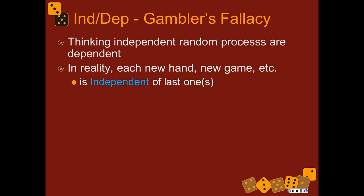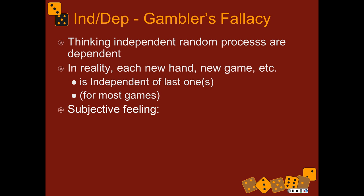Blackjack might be a little different, but if you're playing roulette or a slot machine, each time you pull that handle you've reset back to zero. Your probability of winning on that try is exactly the same as your probability of winning at any other time you pulled that handle. They make the machines that way on purpose. However, your subjective feeling might be that each time you pull the handle the probability depends on the last one — saying 'I've lost a lot, so now it's time for me to win.' That is a totally wrong way of thinking.